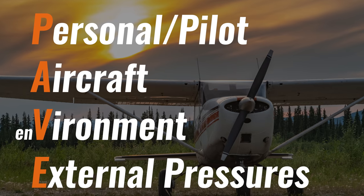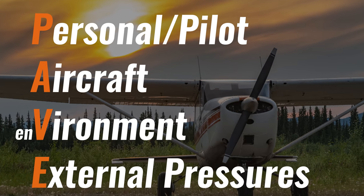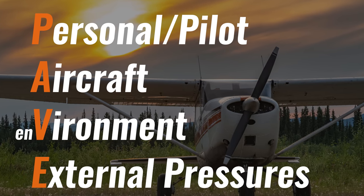First off, I want to break things down using the PAVE acronym — something I use quite a bit as a framework in aviation. P is for Pilot — we'll talk about personal minimums. A is for Aircraft — things we want to get done before the journey. V is for Environment — the big focus today.